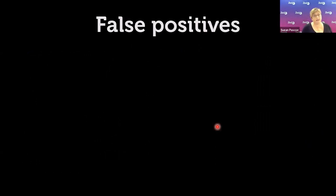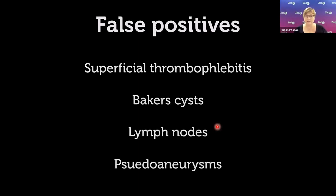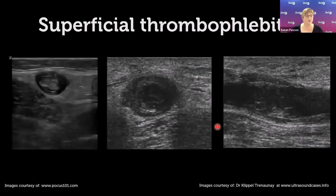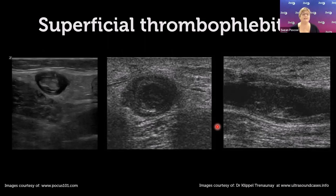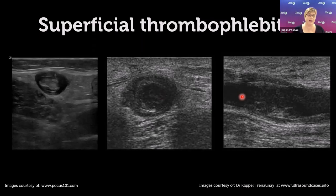Several things can give false positives: superficial thrombophlebitis, Baker cysts, lymph nodes, and pseudoaneurysms. For superficial thrombophlebitis, understand your anatomy — superficial veins are not paired with an artery and sit above the muscle fascia. In this image you can see superficial veins with clot; knowing they're not paired with an artery and are above the fascia helps avoid mistaking them for deep vein thrombosis.